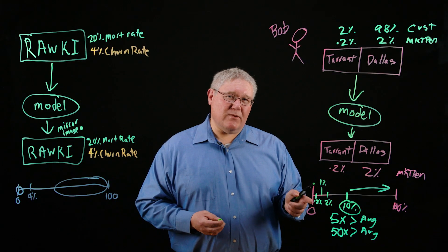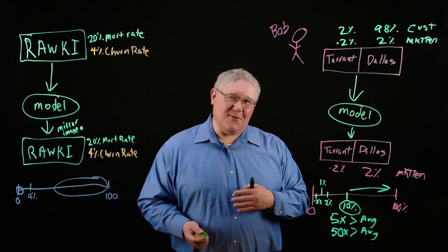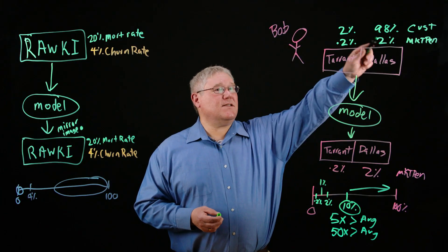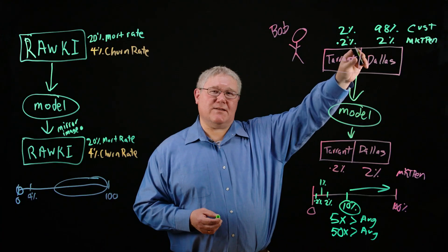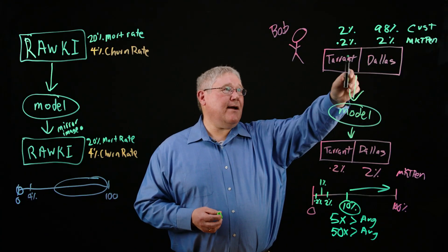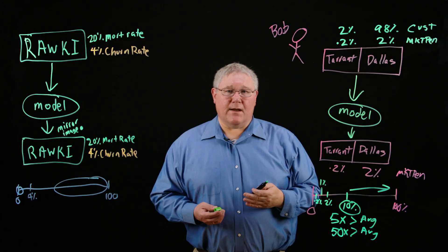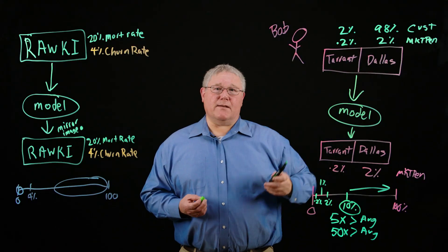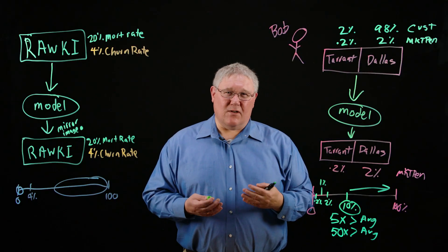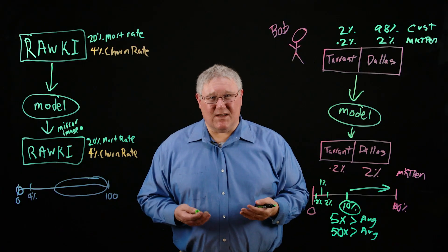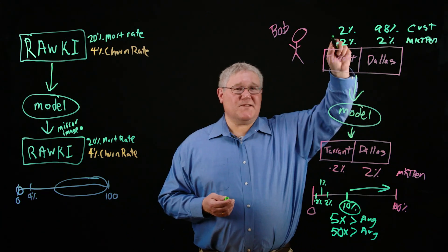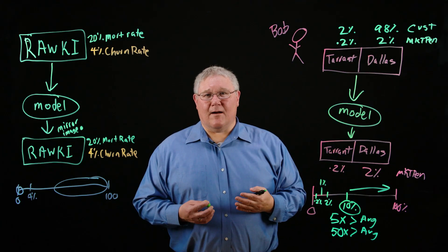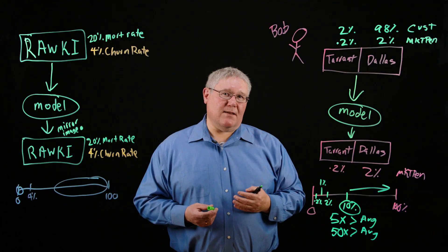That's what most people do in situations where they have data that's different from what they want going forward. Another tactic you can use is to adjust the sample. Right now the sample of customers between Dallas and Tarrant County is about 50 to 1. You can change that sample so it's closer to 50-50 by up-sampling people in Tarrant County or down-sampling people in Dallas County. That can also mitigate the issue.